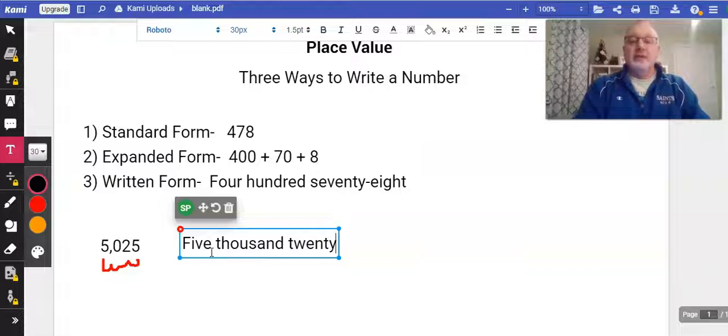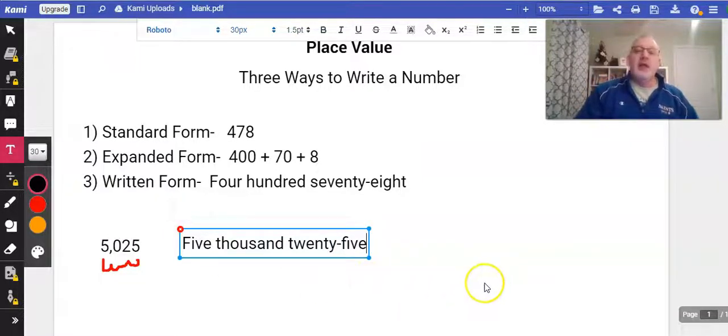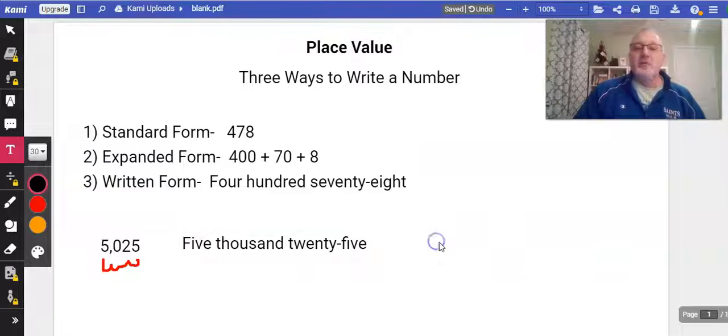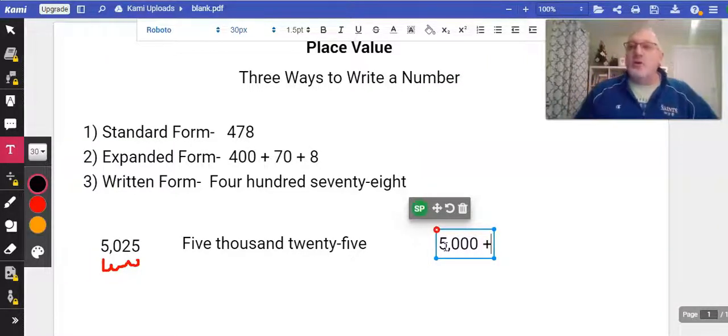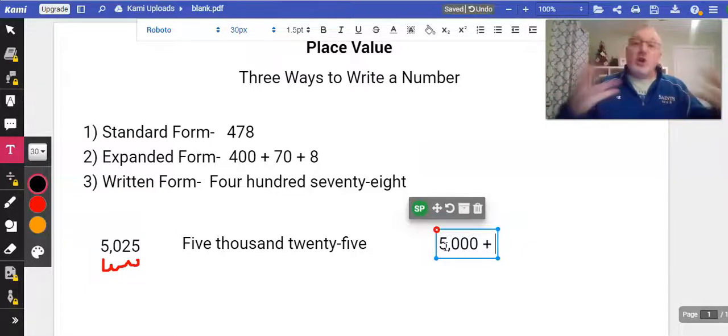And then if we come over here and try to put that in expanded form, well we have 5,000, right, plus, now here's where there's a zero in the hundreds so I don't need to put it there. Some kids do, but there's no hundreds so I don't really need to put plus zero.